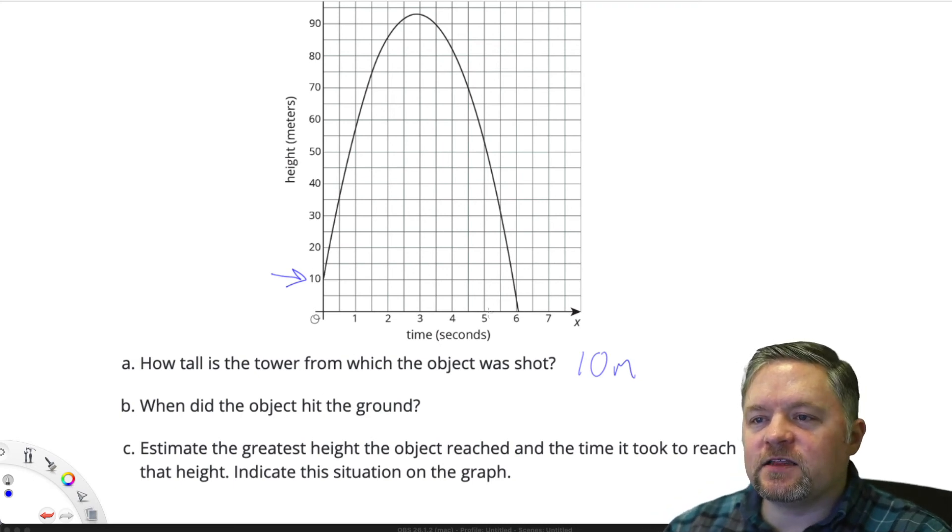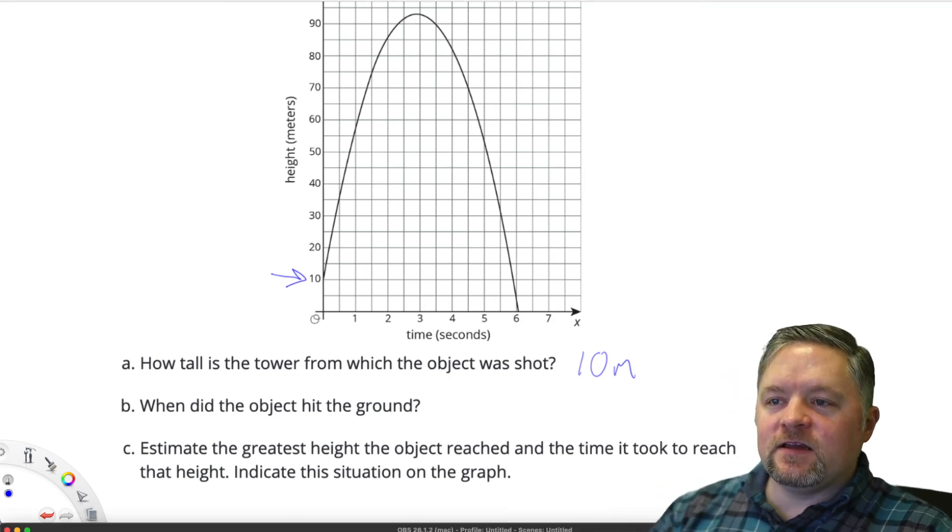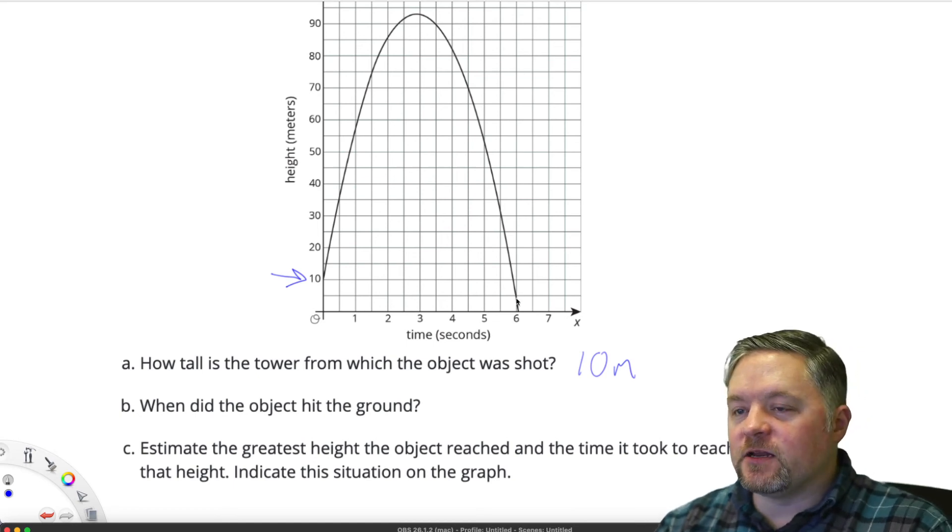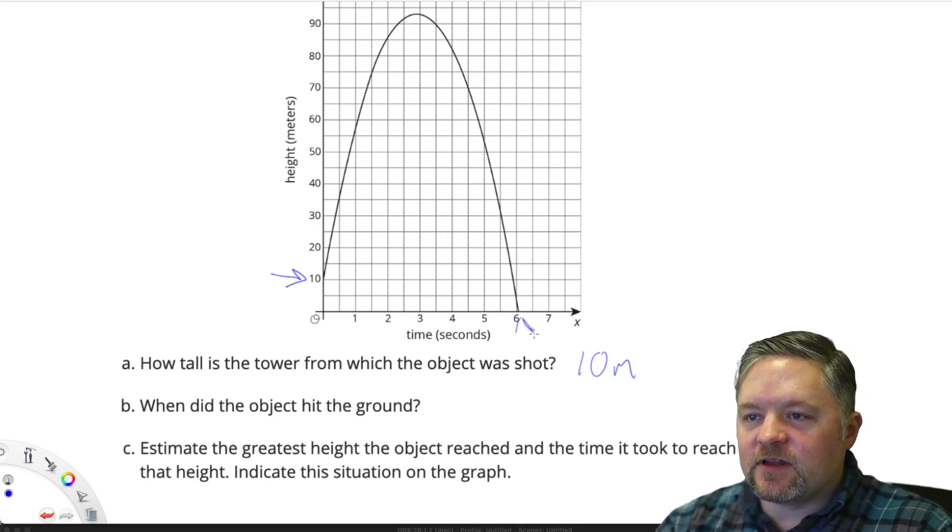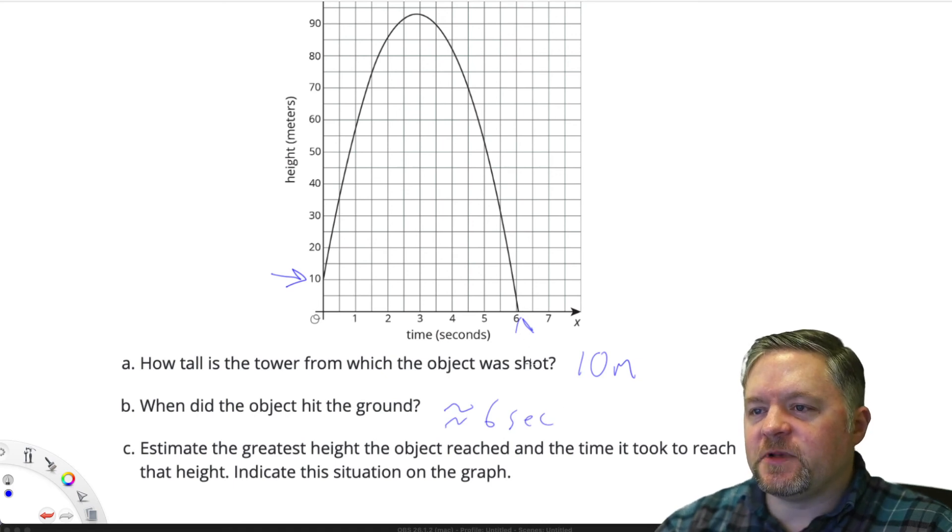When did the object hit the ground? Height in meters of 0. The ground would be a height of 0 meters. We hit the ground here. That looks like about 6 seconds. Looks like it's just a smidge over 6.